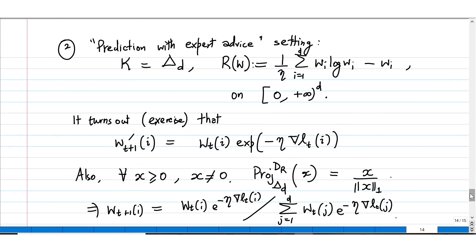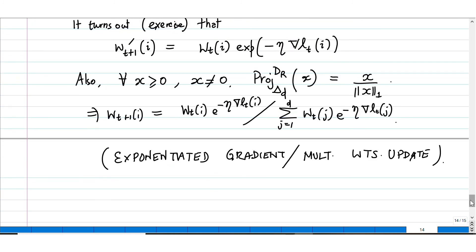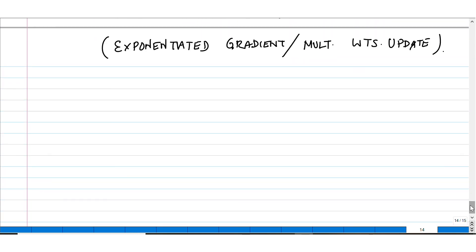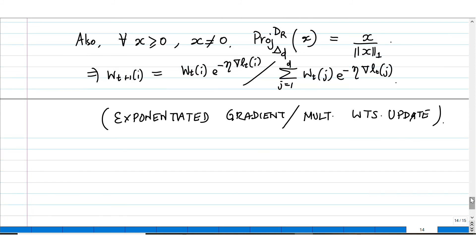For prediction with expert advice it is exactly the same algorithm from both templates. Algebraically, you can normalize each time separately or keep track of e^{−η · Σ gradients} and normalize whenever you want to play — you get the same result. It is a question of when you decide to normalize. It is the same thing algebraically, but it comes from two different viewpoints.